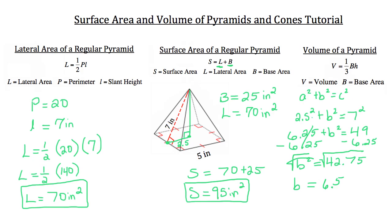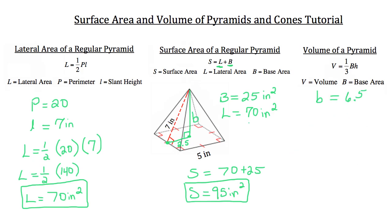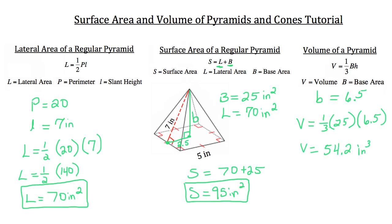Now let's solve for the volume of this pyramid. The volume equals one-third times the area of the base, which we calculated as 25 square inches, times the height, which we just found to be 6.5 inches. Because volume deals with three dimensions — left/right, up/down, and forward/back — our units are cubed: inches cubed.